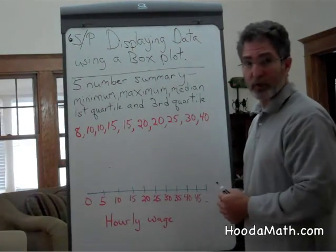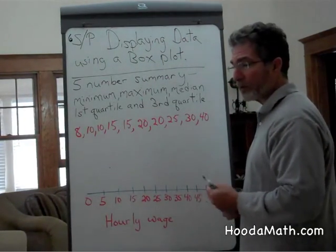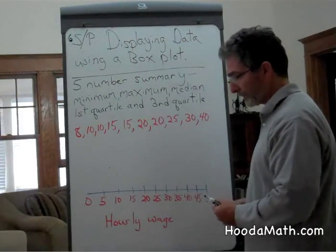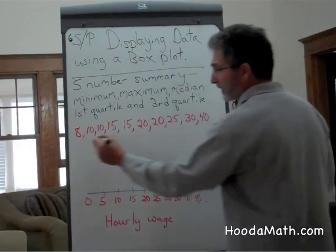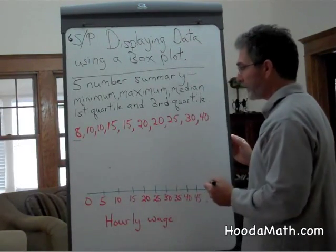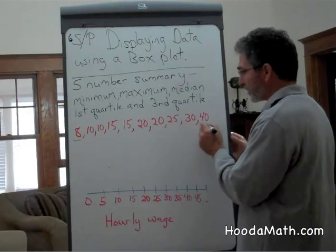These numbers represent an hourly wage for an electrician. The minimum is easy to find. It's the smallest number in a set of data, and the maximum as well.